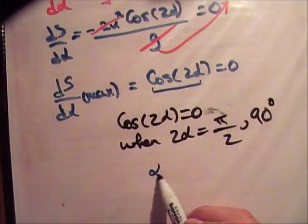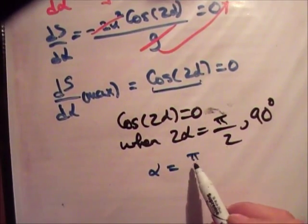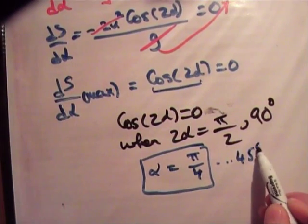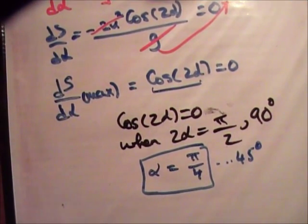So, therefore, alpha is equal to pi over 4. So, in order to get the maximum, you differentiate your function, set it to 0. And in this case, in order to get maximum distance, you elevate your projectile to an angle of 45 degrees.